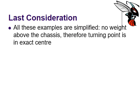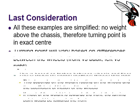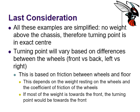All of these examples are quite simplified — there is no weight above the chassis. Our first challenge is to just build a base chassis without adding lifting mechanisms on top. When the robot is perfectly balanced, the turning point will be at exact center. But bear in mind that when you start building things on top of your chassis, the turning point is going to be affected by the difference between the wheels and the normal force being exerted on them. If most of the weight is towards the front of the robot, the turning point is going to move towards the front.